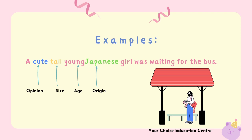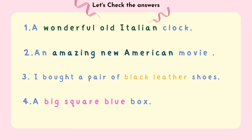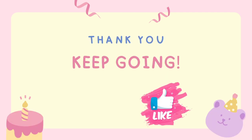Now you can pause the video and check your answers. The answers are: number one — a wonderful old Italian clock; number two — an amazing new American movie; number three — I bought a pair of black leather shoes; number four — a big square blue box. Thank you, keep going, bye!